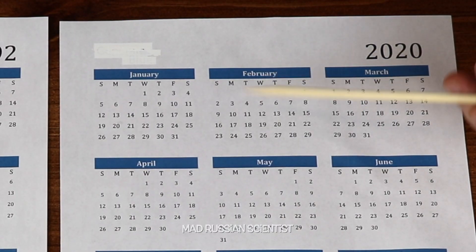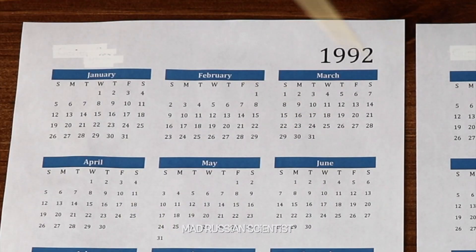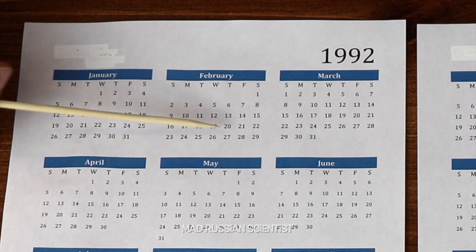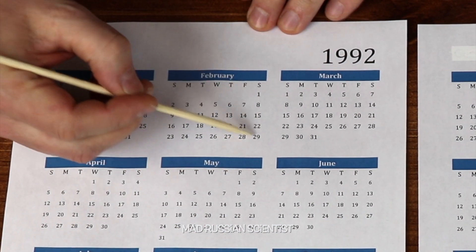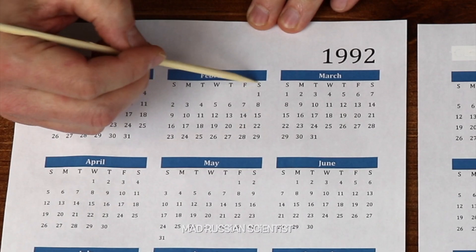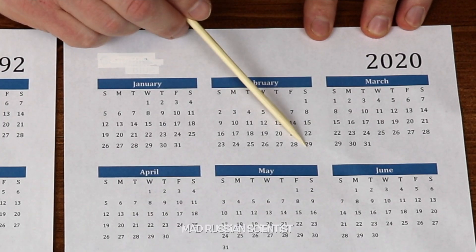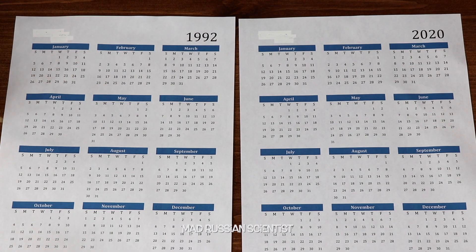For example, if you look at February — it's a leap year this year, and 1992 was a leap year as well. You can see the 29th of February was a Saturday, and in 2020, February 29th is a Saturday as well.